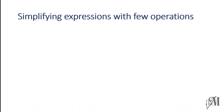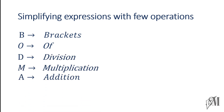Now we will move on to the next section: simplifying expressions with multiple operations. Suppose you have addition, multiplication, division, subtraction and more in one expression — how do you simplify? For this we follow a special rule called BODMAS: B is for Brackets, O is for Off, D for Division, M for Multiplication, A for Addition, and S for Subtraction. We go in this order when simplifying expressions with more than one type of operation. If you follow this, your answer will be accurate; otherwise it will be wrong.